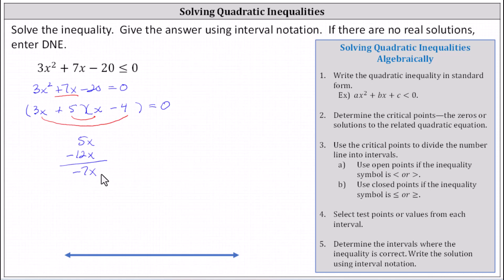We simply change the sign of the five and the negative four. Change this to minus five, change this to plus four. Now the inner product is −5x, the outer product is +12x, and the sum is positive 7x. We now have the correct factors.